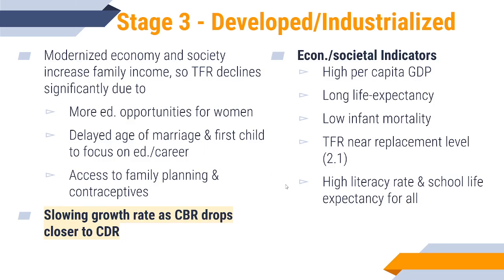When we hit stage three — the developed industrialized society — the modernized economy means more family income. We see fertility rates declining because of educational and job opportunities, delayed ages of marriage and first child, as well as access to contraceptives and the concept of family planning. The birth rate starts to decline; by this point all the modernizations from stage two are still in effect — they don't get worse. So the death rate continues to remain low as the birth rate declines to get closer to it. The population is still growing in stage three, but now growing much more slowly.